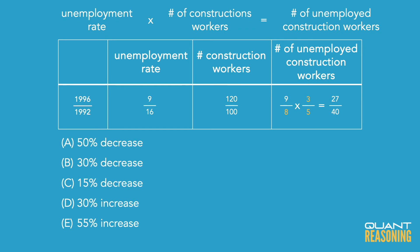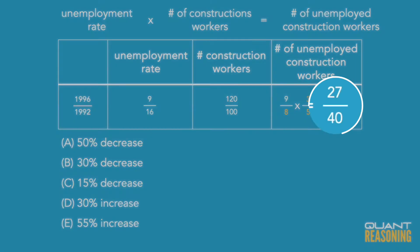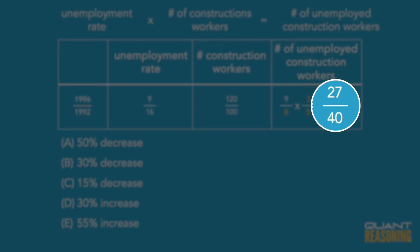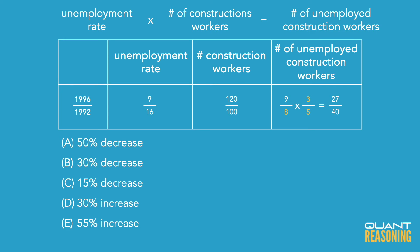So what that means is, if the starting number of unemployed construction workers was 40, now we have 27. That means the number got reduced, so we can eliminate answer choices D and E. Looking at the remaining answer choices, was it reduced by half? No, that would have been 20 over 40, so eliminate A. Was it reduced by 15%? No, because 15% of 40 is 6, and that would have been true if we ended up with 34 over 40. So C isn't right either, and we're left with only one answer choice: answer choice B.